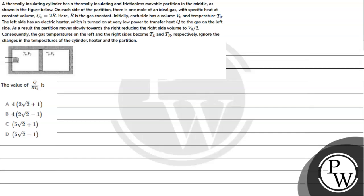Let's read the given question. A thermally insulating cylinder has a thermally insulating and frictionless movable partition in the middle as shown in the figure below. On each side of the partition, there is one mole of an ideal gas with specific heat at constant volume Cv equal to 2R, where R is the gas constant. Initially, each side has volume V₀ and temperature T₀. The left side has an electric heater which is turned on at very low power to transfer heat Q to the gas on the left side.